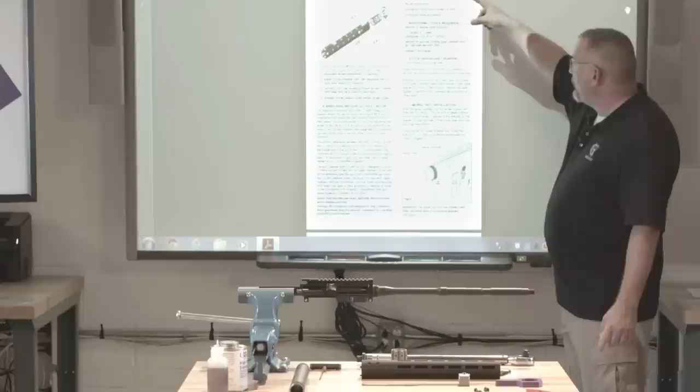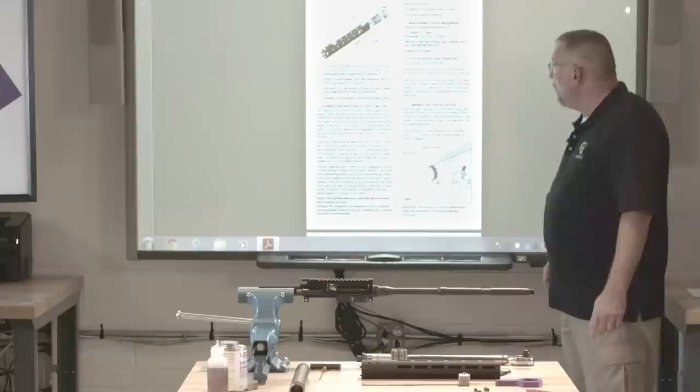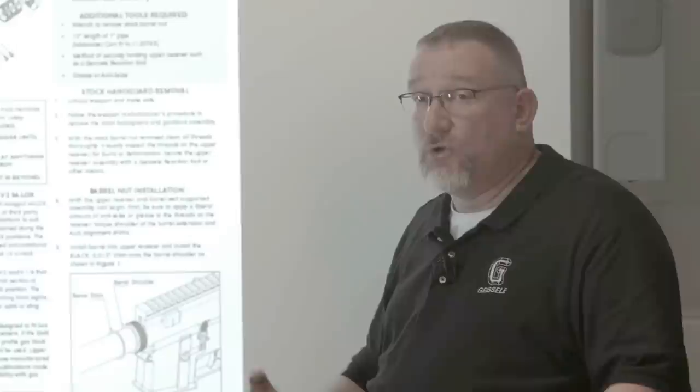You can see the things that the rail comes with right here. It comes with the rail, proprietary barrel nut and a shim kit, barrel nut wrench, hand guard attachment screws. There are six of them. It comes with the instruction sheet and the drawing.